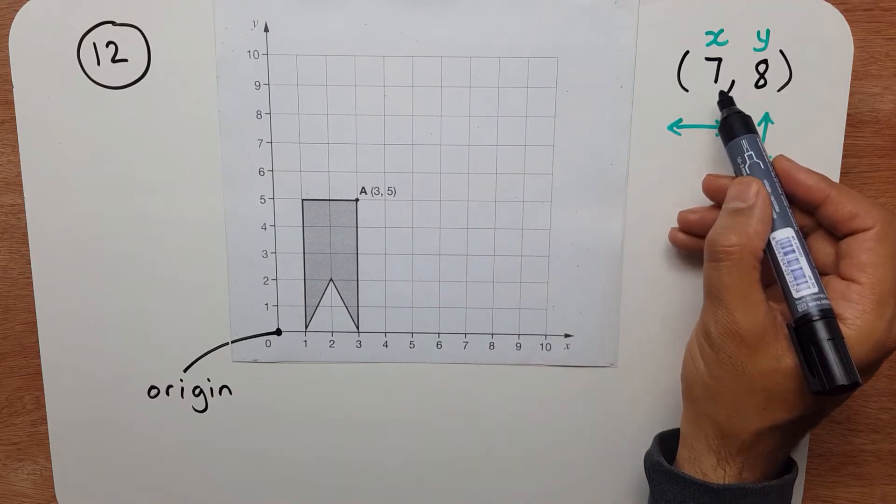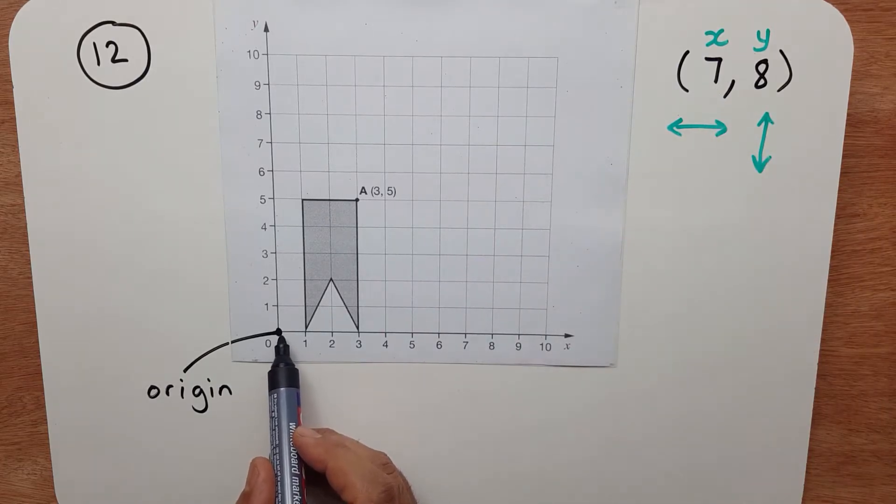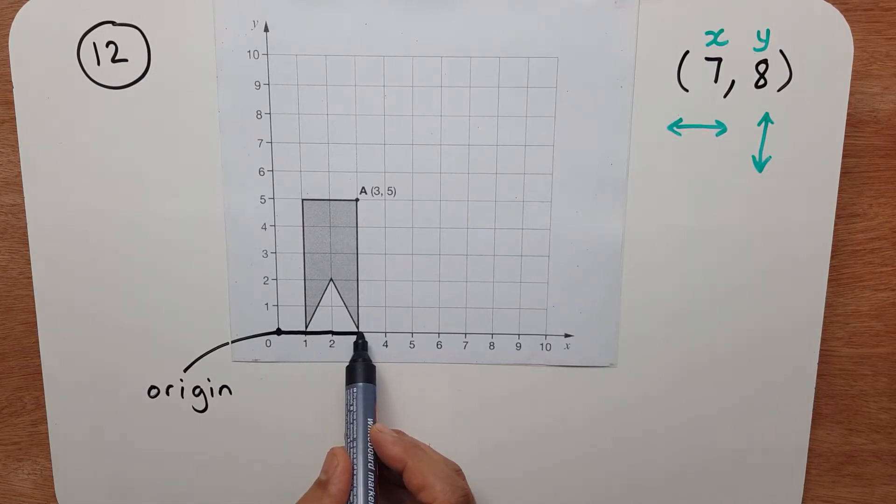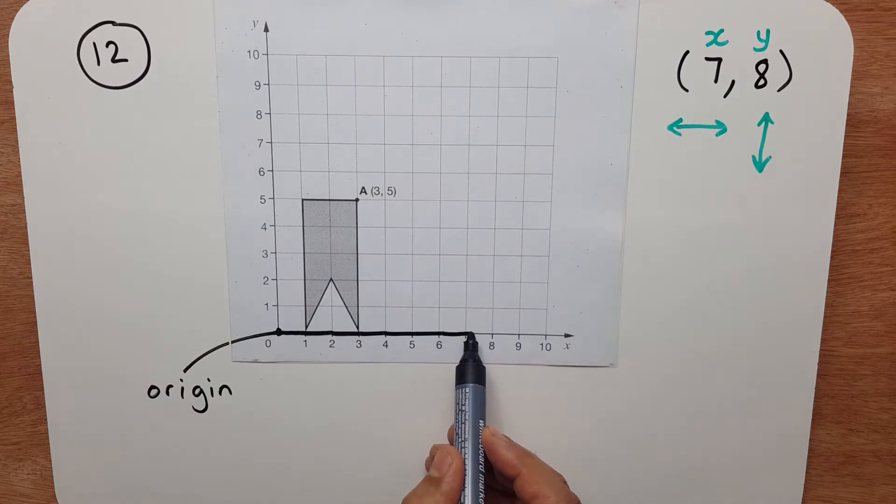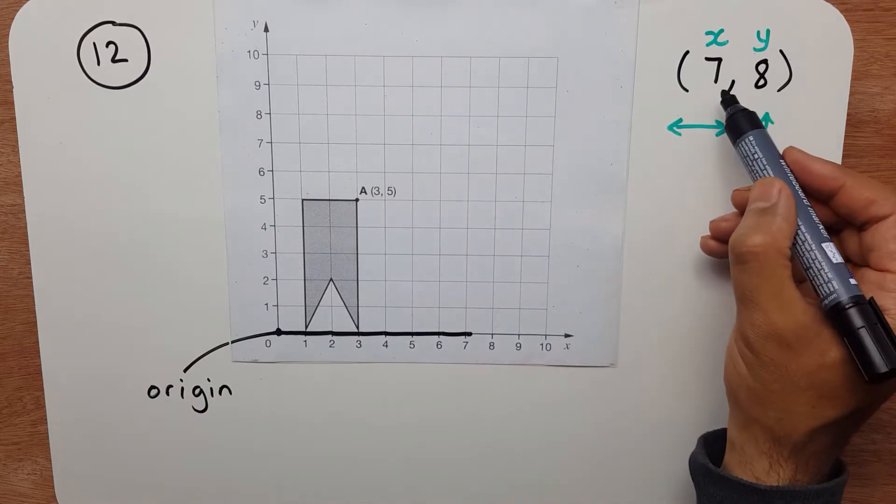Now we need to travel 7 in the x-direction. So let's go 1, 2, 3, 4, 5, 6, 7. So I've done that bit.